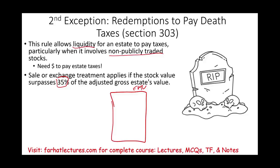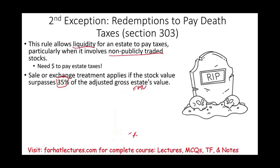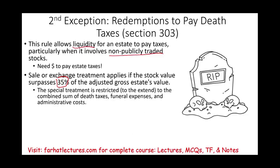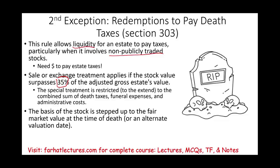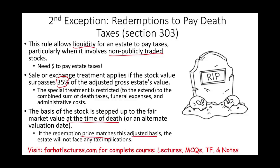When someone dies, the fair market value of all estate assets is assessed — stocks, bonds, real estate, etc. As long as 35% or more of the estate is tied up in stock, it can be liquidated as a redemption. This special treatment is restricted to the combined sum of death taxes, funeral expenses, and administrative costs. Anything else is treated as a dividend. The basis of the stock is stepped up to fair market value at the time of death, so when redeemed immediately, the redemption price typically matches the adjusted basis — meaning no tax consequences.